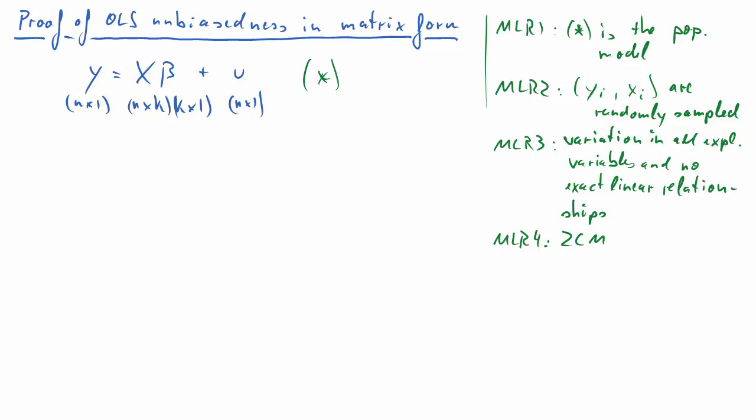And the fourth assumption is the zero conditional mean assumption. As in the simple regression case we're assuming that conditional on any values for our explanatory variables, of which we have k, the expected value for the error term is zero. In other words, the u's and all the x variables, the explanatory variables are uncorrelated.